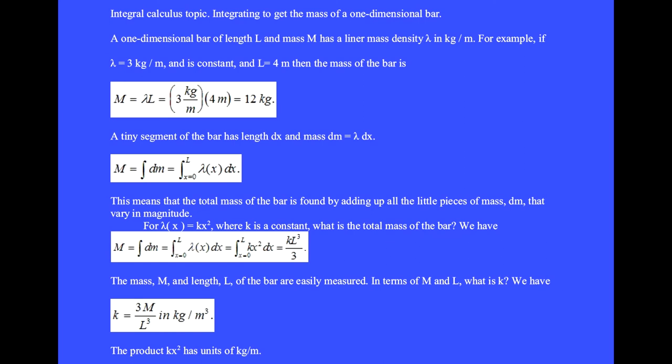The product k times x squared has units of kilograms per meter. In this case, the length x has units of meters.